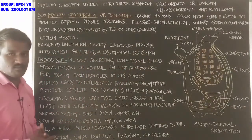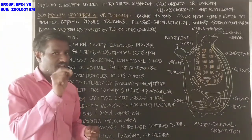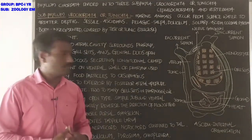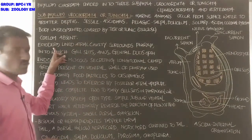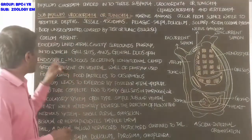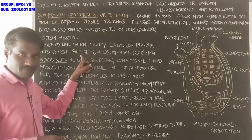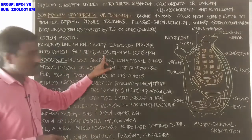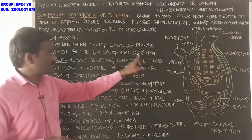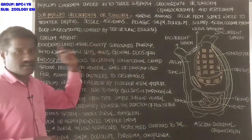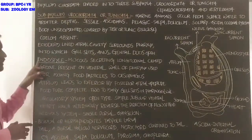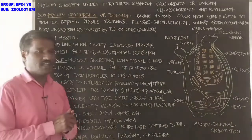A large cavity is present in the inner part of the body called the atrial cavity. It is lined with ectoderm. This ectoderm-lined atrial cavity surrounds the pharynx, and into the atrial cavity, gill slits, respiratory organs, anus, and genital ducts are open.